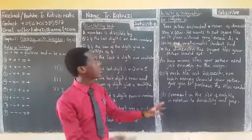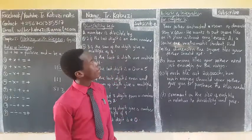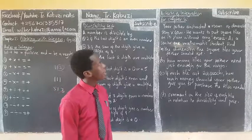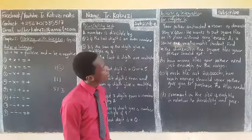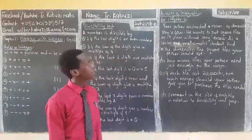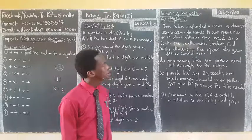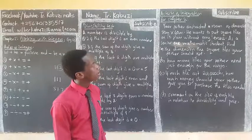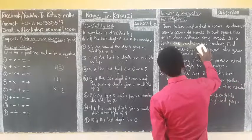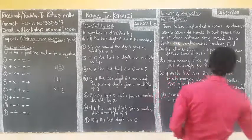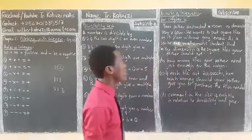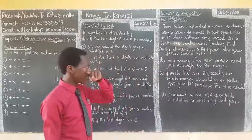Let us now see our integration activity that is summarizing our topic. Your father constructed a room of dimensions 80 meters by 60 meters. He wants to put square tiles on the floor without any excess, so you want an exact number. As a mathematics student, find the dimensions of the square tiles your father should use.